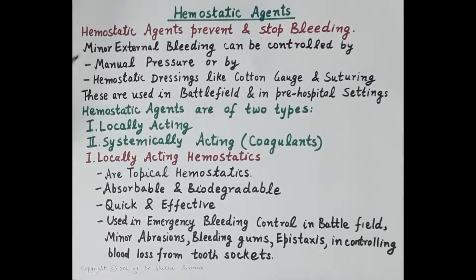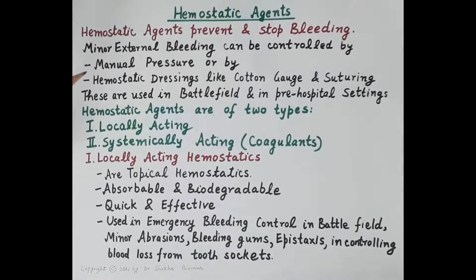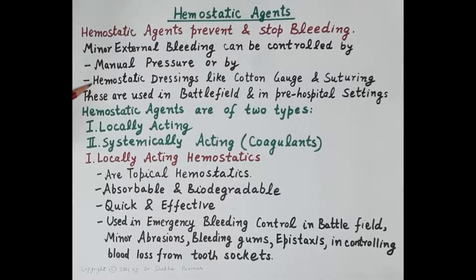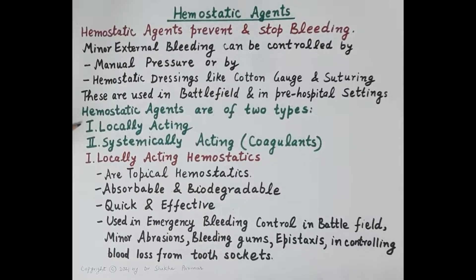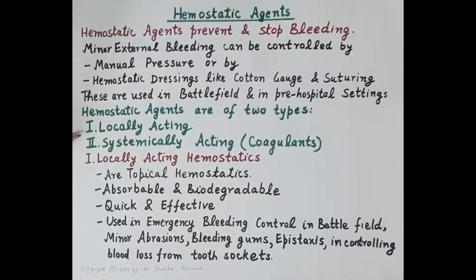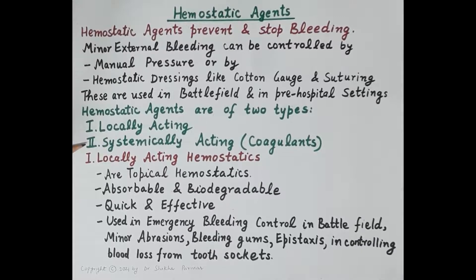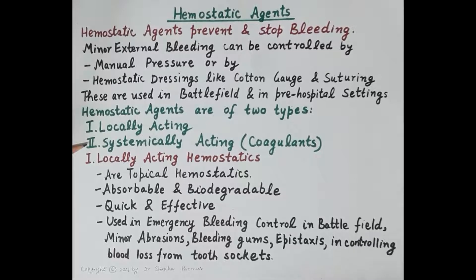Minor external bleeding can be controlled by manual pressure, hemostatic dressings like cotton gauze, or by suturing. These are used in the battlefield and in pre-hospital settings. Hemostatic agents are of two types: locally acting hemostatics and systemically acting hemostatics. Systemically acting hemostatics are also called coagulants.